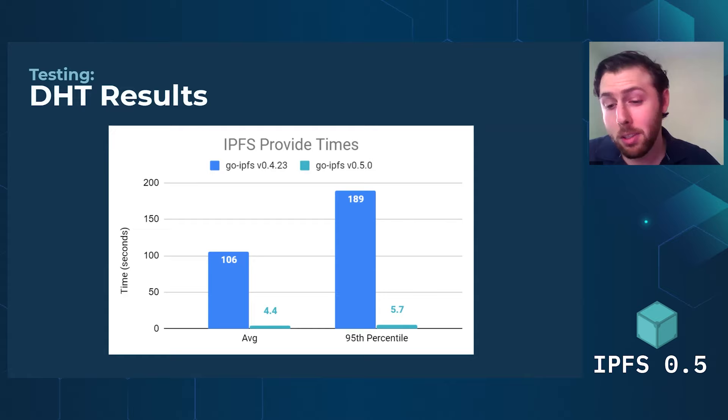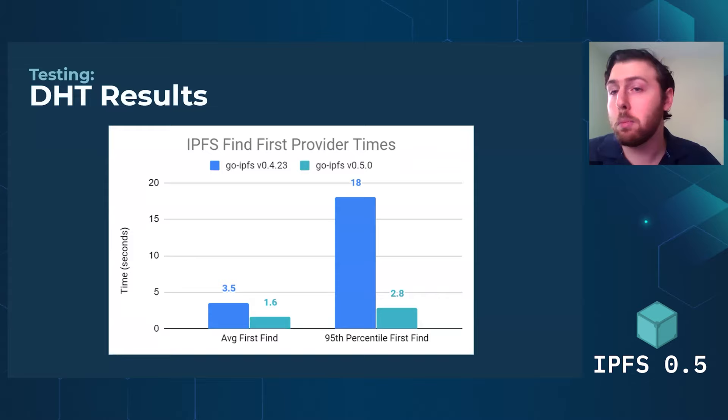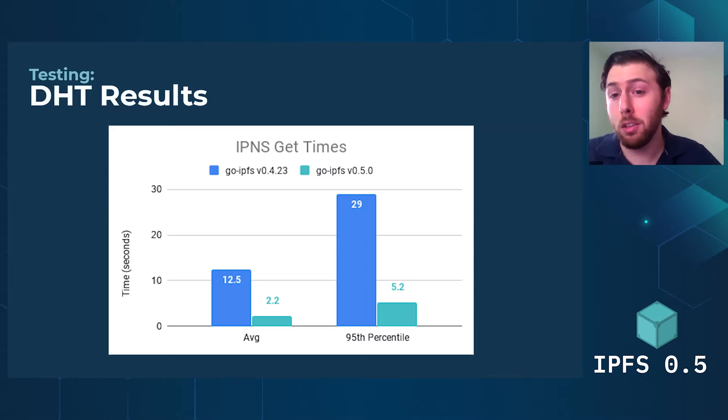This next chart is effectively how long it takes to find the first provider — how long it takes for you to start downloading data with BitSwap. That's gotten faster, but not quite as dramatically. And then finally, IPNS get times, which were also quite slow — much slower than the IPFS times — and those have gotten a lot faster too.